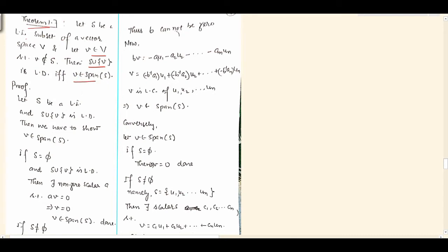This is a very important theorem and will be used ahead. We have S as an LI subset given, v is a vector from V which is not in S. We need to show the two conditions: S union v is LD if and only if v belongs to span of S.